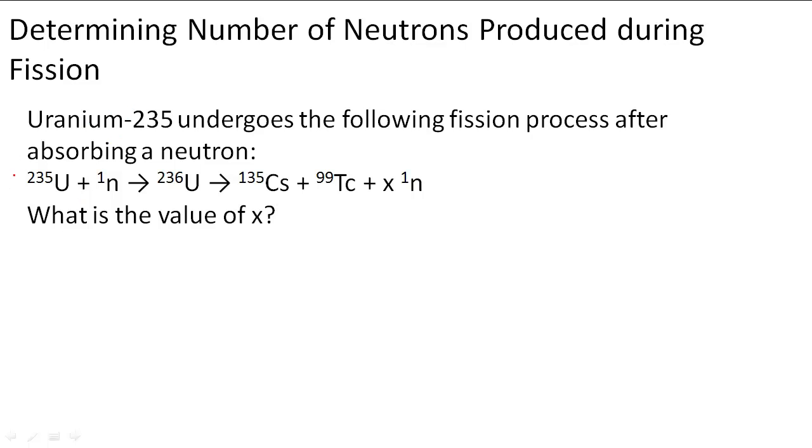So here uranium is absorbing a neutron and now it has 236 mass number, and then as we go down we see that we have two smaller nuclei and a number of neutrons. We don't know what x is, so we have to find out how many neutrons are produced.